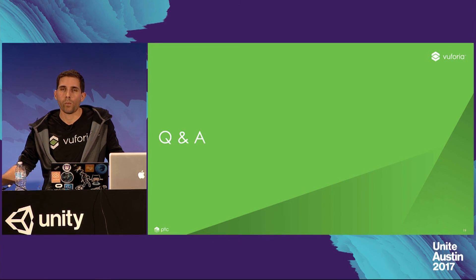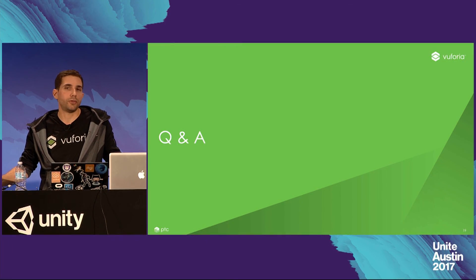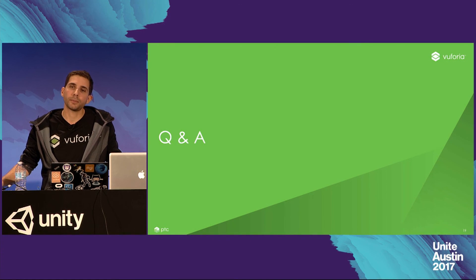Question: What is the estimated release date for V4.07? Answer: V4.07 is slated to be released with the next major version of Unity.